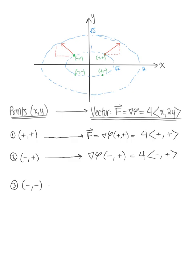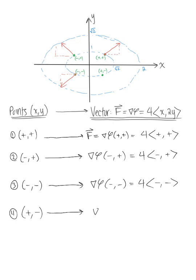For an arbitrary point in quadrant 3, the gradient of φ has both negative x and negative y components, so the vector points down and out. In quadrant 4, with positive x and negative y, the gradient has a positive x value and a negative y value, so the vector points down. We can see that we have a radial field, and we can incorporate these vectors on the level curves pointing outward.